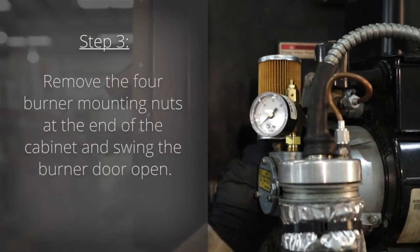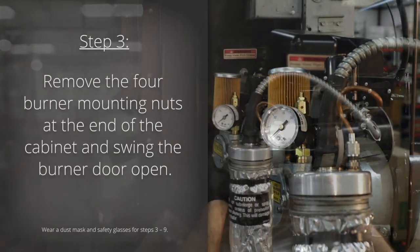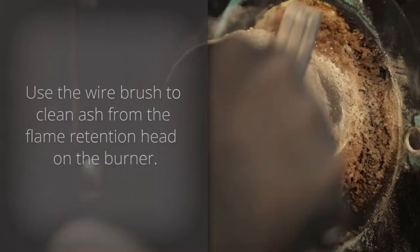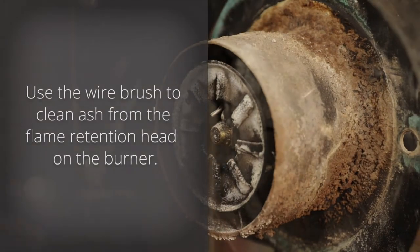Step three, remove the four burner mounting nuts at the end of the cabinet and swing the burner door open. Use the wire brush to clean ash from the flame retention head on the burner.